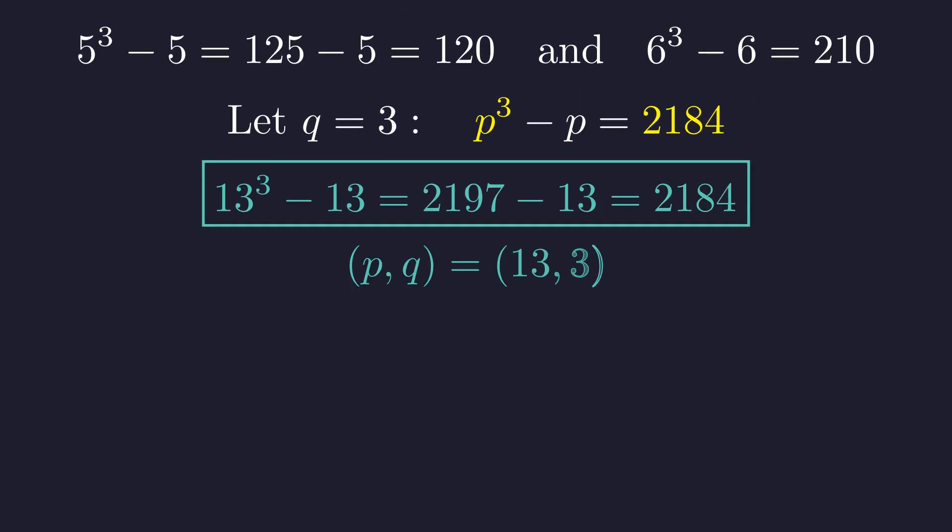The pair p equals 13, q equals 3 is a solution. However, finding one solution by inspection is not a proof of uniqueness. A systematic method is required to determine if other solutions exist.